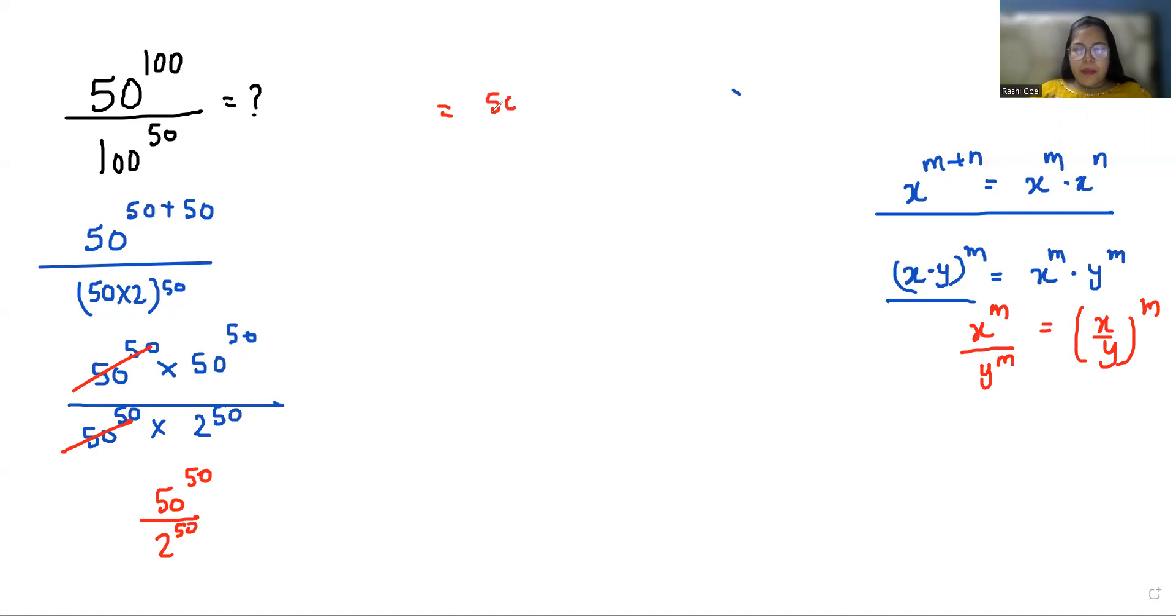So (50/2)^50. When we divide 50 by 2 we get 25, so 25^50. And 25 is a square of 5, so (5²)^50. Another exponent rule: (a^m)^n equals a^(m×n).